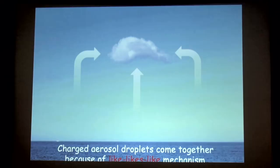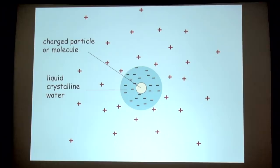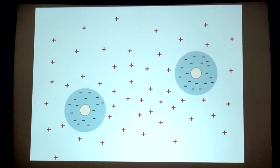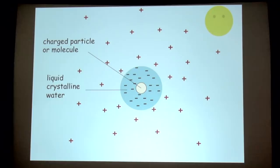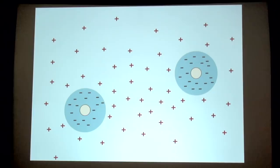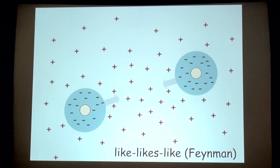Here's a summary: if you have a charged particle or molecule in water, you have a liquid crystal EZ water around it, negatively charged, with protons or hydronium ions spread throughout — powered by electromagnetic energy. Now suppose we have two particles, both negatively charged. The reflexive response is that they'll repel each other. However, they actually attract. This was shown almost a hundred years ago by Irving Langmuir, and Richard Feynman called it 'like-likes-like' — like charges attract each other and come closer together.